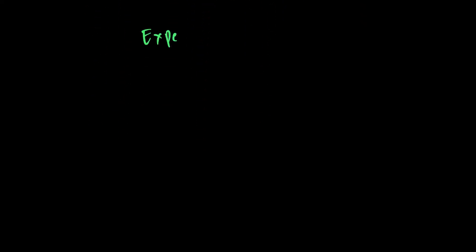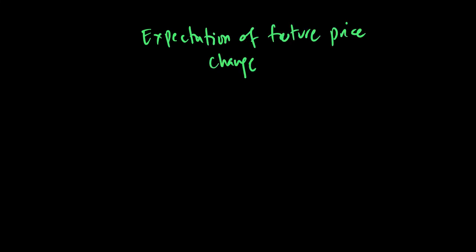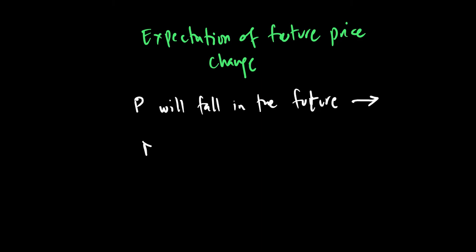Lastly, there is a factor called expectation of future price change. If consumers believe prices will fall in the future, they are likely to buy more later when prices fall. This is common with high-tech products — new technology is more expensive initially and only some people buy it. Others wait for the price to go down, and as soon as it does, they buy. So if we believe the price will fall in the future, we can expect demand to fall right now but rise later.